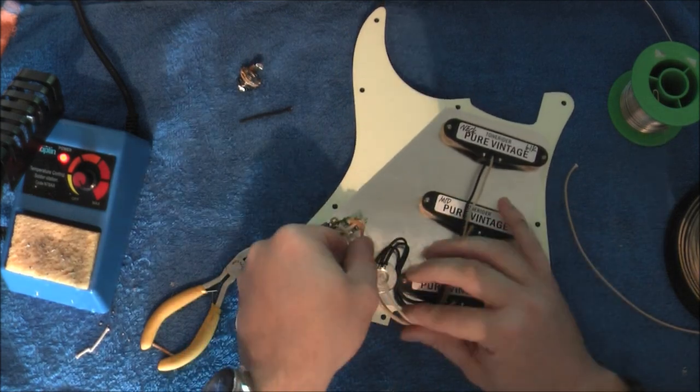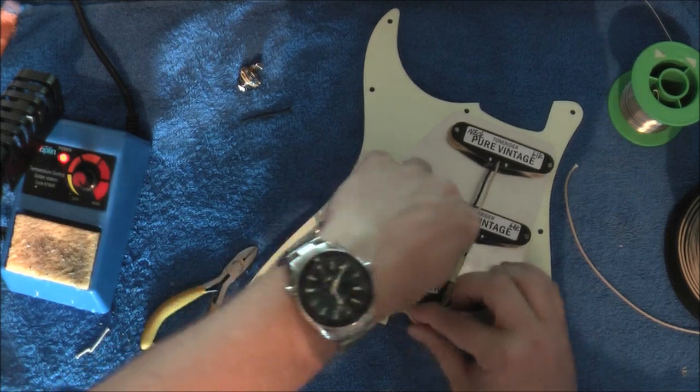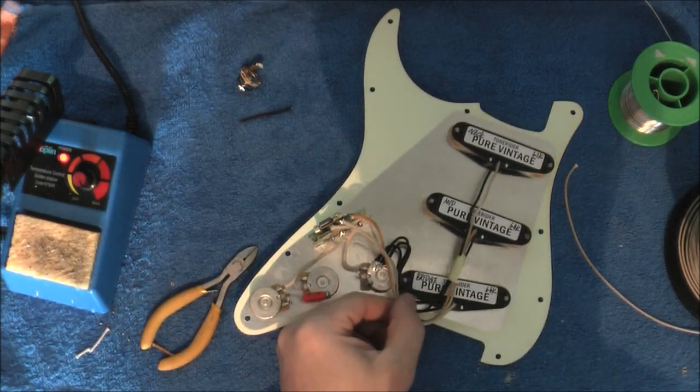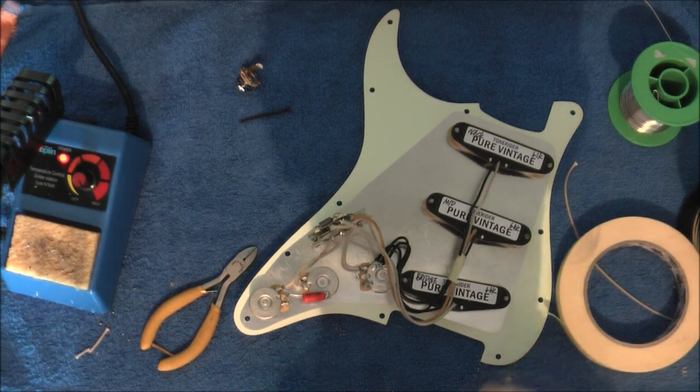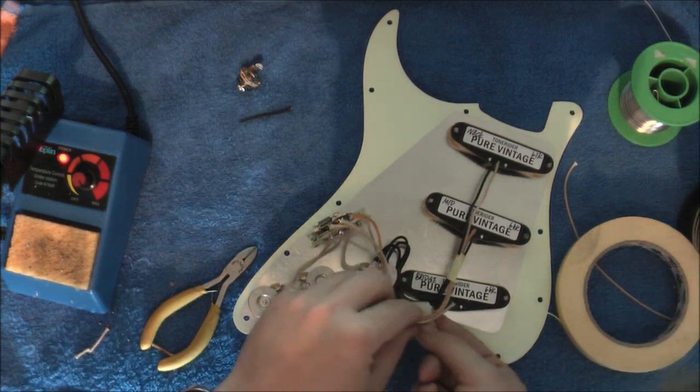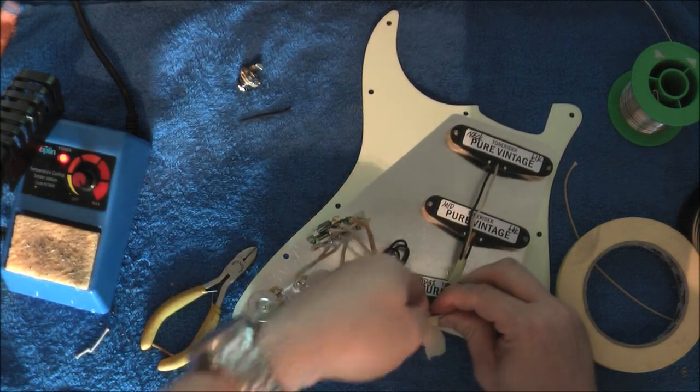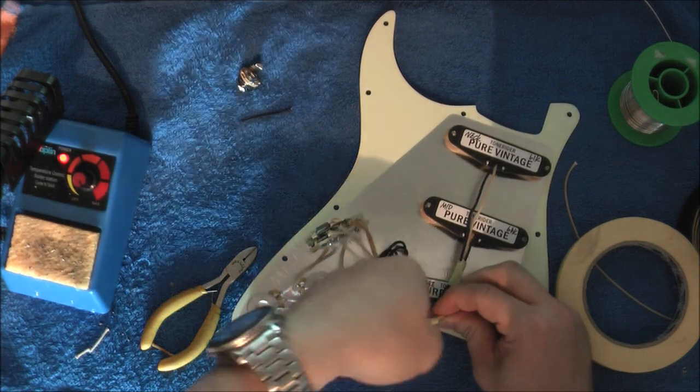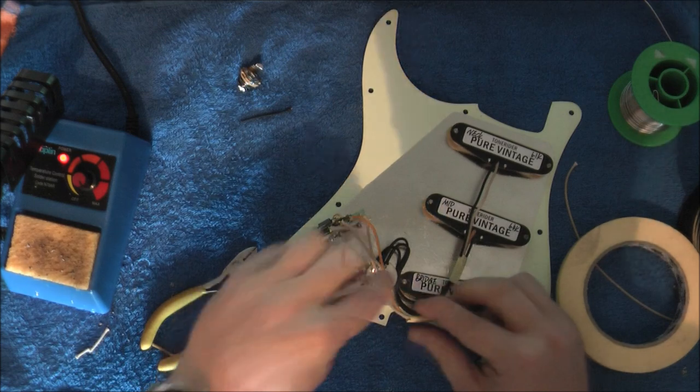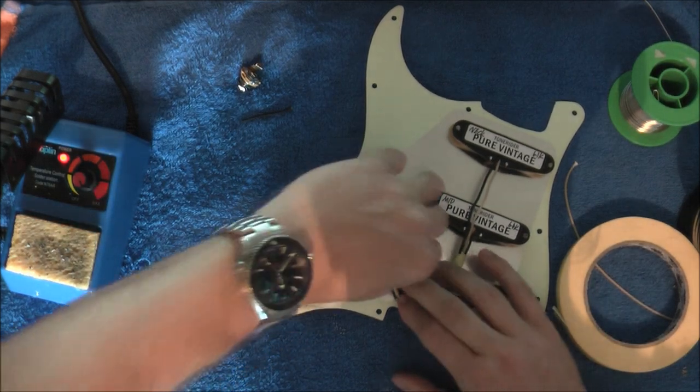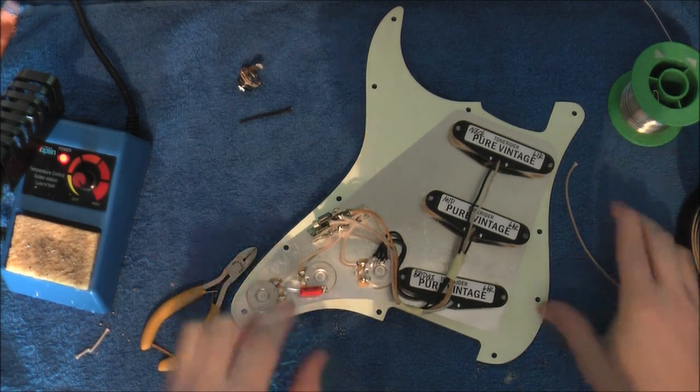There we go. So there are three pickup wires. And again they'll go around there roughly in the same place. I'm just going to put a little bit of masking tape on there just to keep them together. And there we go. So it's nice and tidy. I've just got to wire the output jack socket now.